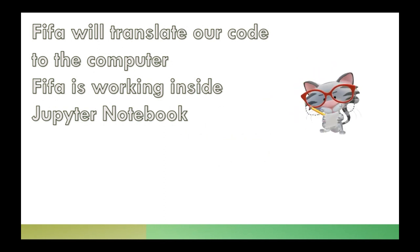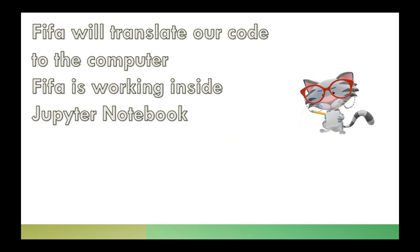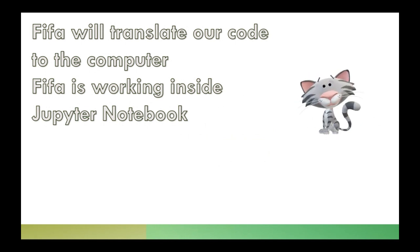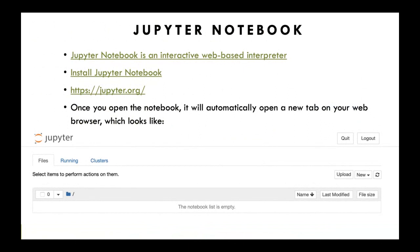FIFA is stored inside a program called Jupyter Notebook. Jupyter Notebook has a Python interpreter which we will use to run our code, so please install Jupyter Notebook. It's really nice because it's web-based and has an interactive mode, so you can run things and see the results right away in your browser — Safari, Chrome, anything. Download and install it from the provided link.